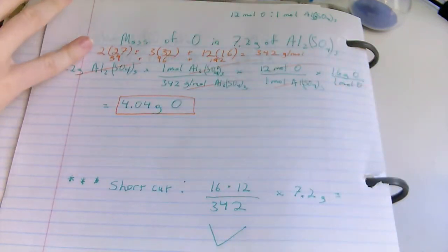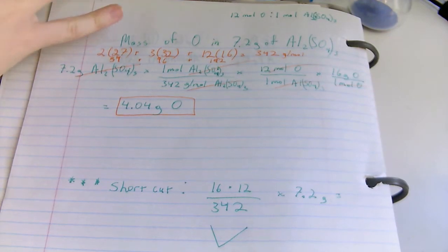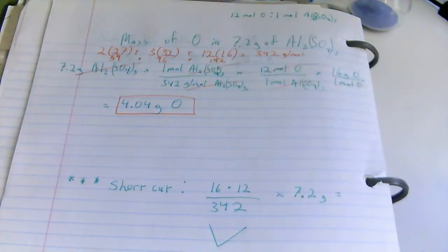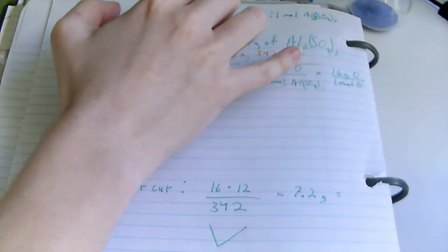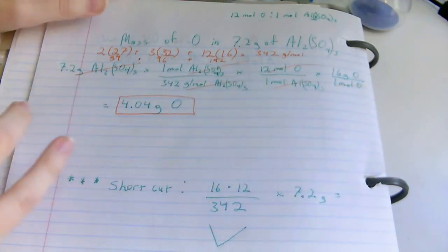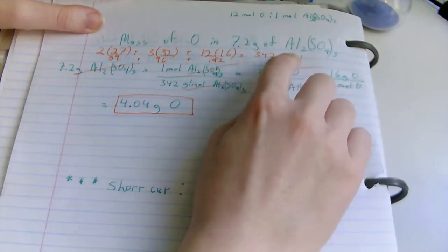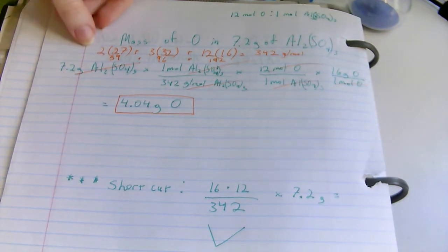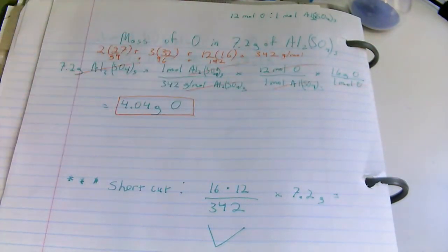So this problem is asking for the mass of oxygen in 7.2 grams of aluminum sulfate, Al2(SO4)3. So first thing first, we do have to find the total molar mass of aluminum sulfate. Working this out correctly will give you 342 grams per mole.